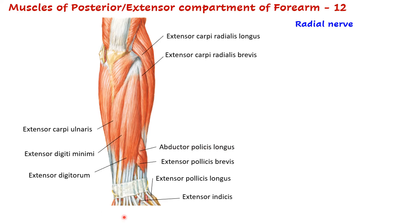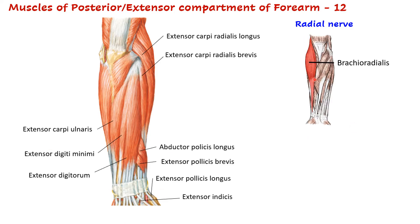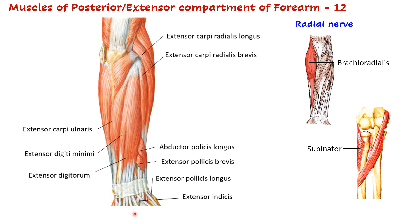There are three more muscles besides these nine, making 12 in total. One is brachioradialis — note the word 'radial' in the name. Then we have supinator, which is pierced by the radial nerve and is also supplied by it. The third is anconeus. These three additional muscles are also supplied by the radial nerve, giving a total of 12 muscles in the extensor compartment of the forearm.